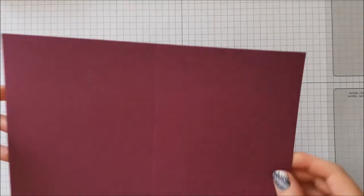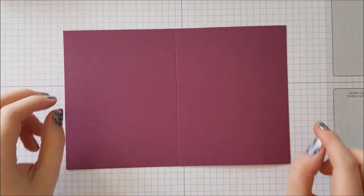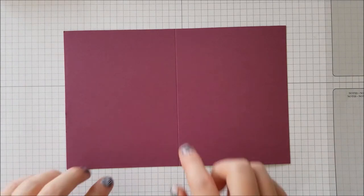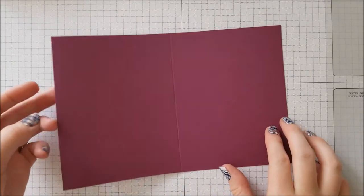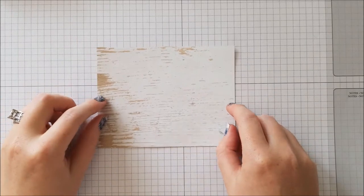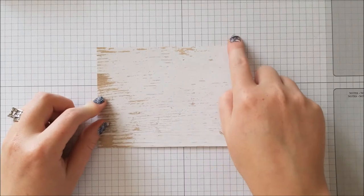So for the one that we're doing today, we will start off with the card base, which is a piece of rich razzleberry cardstock cut to eight and a half by five and a half inches, and it's scored in half at four and a quarter. The piece that we'll be stamping on is a piece of the Wood Textures Designer Series paper, and it measures five and a quarter by four inches.